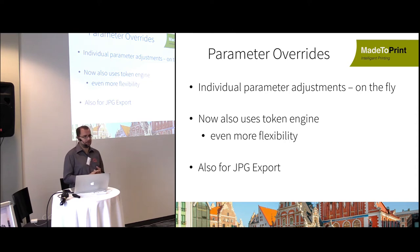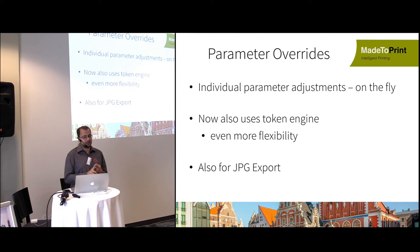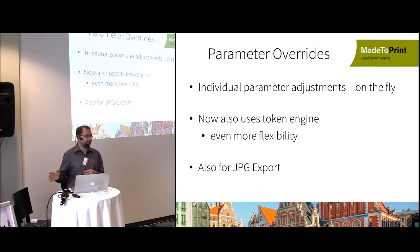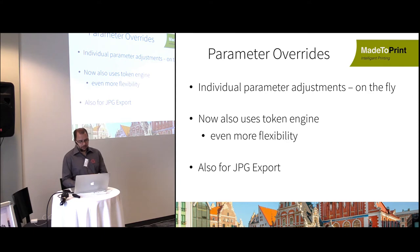A new addition is that the token engine is now supported in the value fields for parameter overrides. You can ask the user individually, access metadata, or place a text file with information on your system. Additionally, the JPEG export now also supports parameter overwrites.